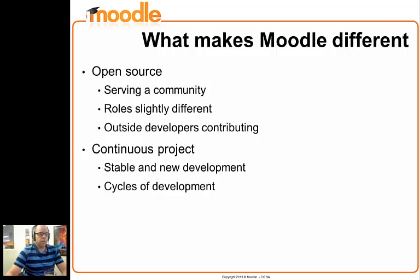Moodle isn't something that gets finished and handed over and released and forgotten. Moodle is a continuous project — we're continuously working to make Moodle better. That means there is stable development, fixing of existing code with bugs and improvements, and also new development to add new features and to replace features with new code. Instead of handing over a product and forgetting about it, we have cycles of development and various levels of release, and we try to work towards those in a continuous fashion.